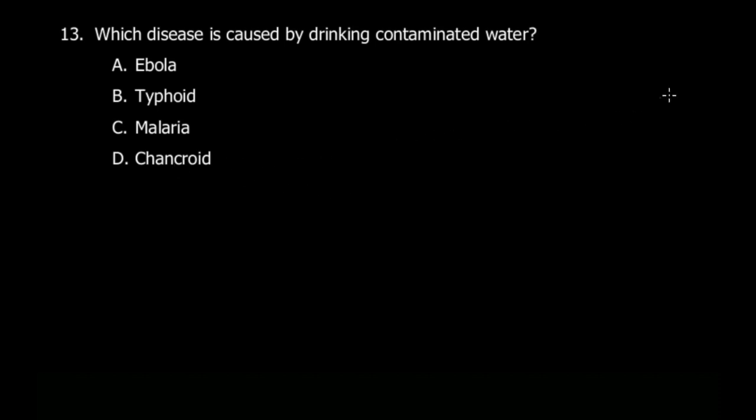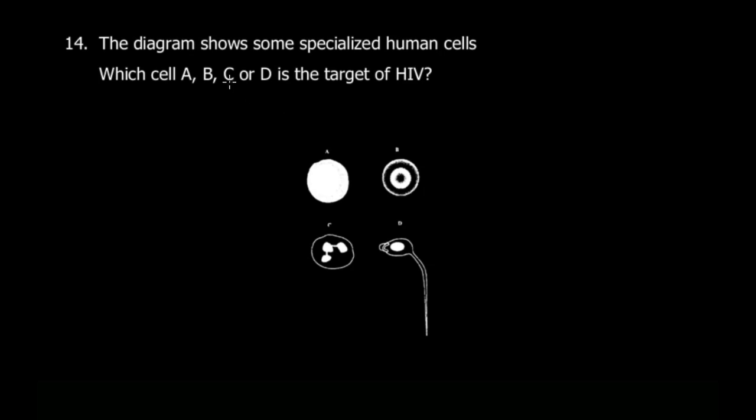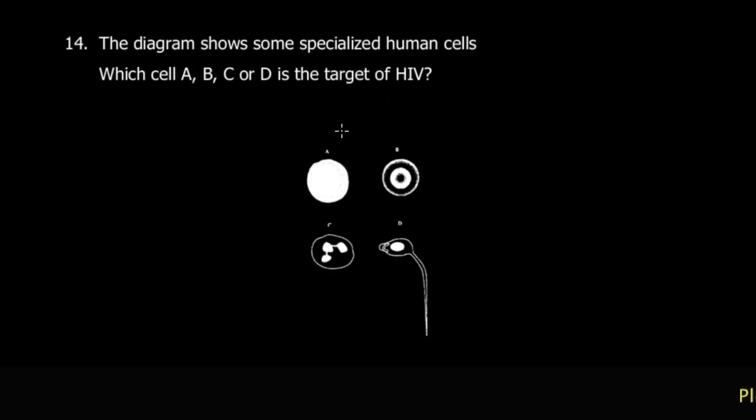Let's quickly move to the next part. The diagram shows some specialized human cells. Which cell A, B, C, or D is the target of HIV? So I asked to evaluate here. The first thing you can do is identify what the cells are. I don't know when ZimSec will start giving you guys colored images, but some of these images are a little bit tricky to tell exactly what they are.